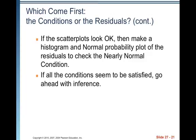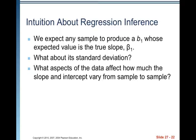then make a histogram and normal or normal probability plot of the residuals to check the nearly normal condition. So you're making a residual plot, scatter plot, and then you're taking the same residuals and making a histogram or normal probability plot. If all these conditions seem to be satisfied, go ahead and make inference.